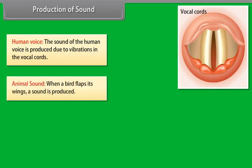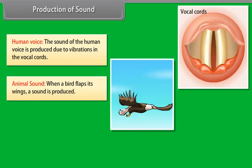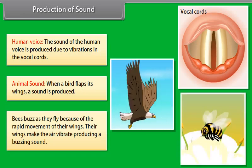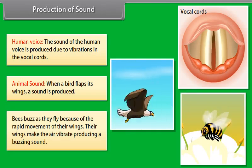Animal sound: When a bird flaps its wings, a sound is produced. Bees buzz as they fly because of the rapid movement of their wings. Their wings make the air vibrate producing a buzzing sound.